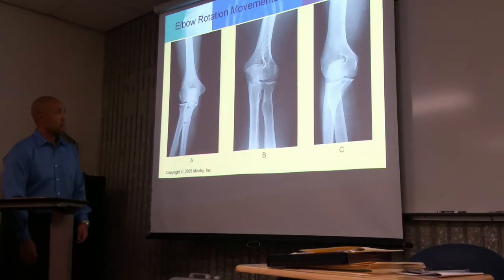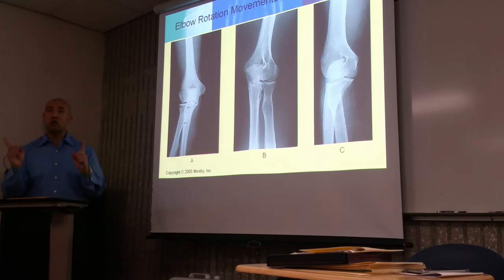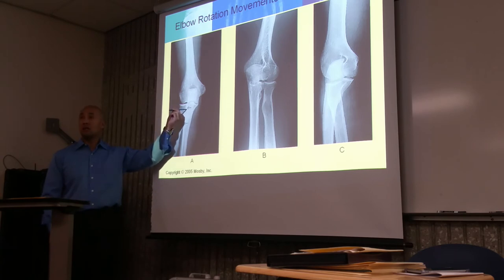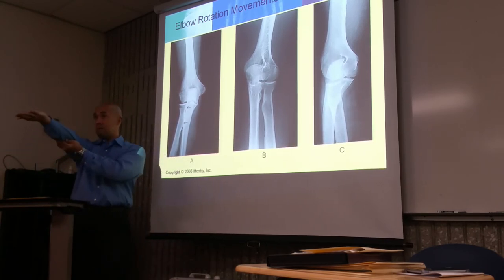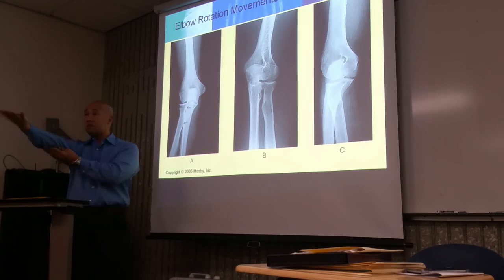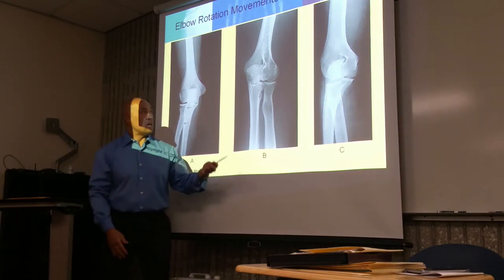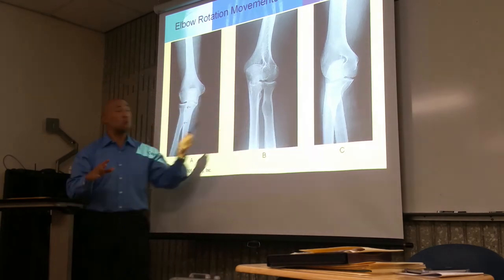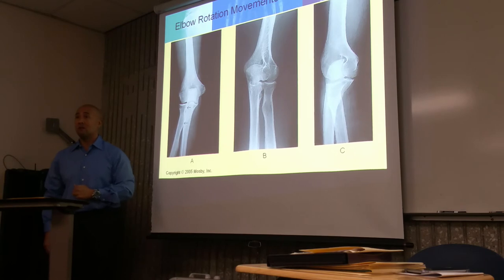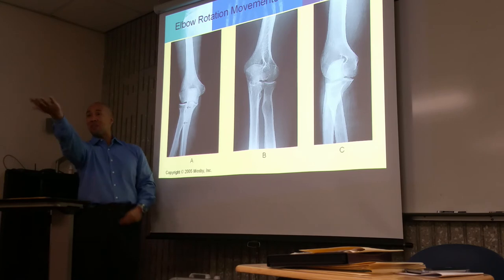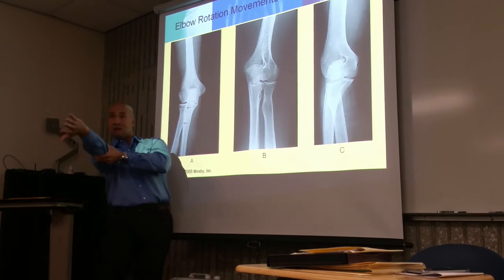Here we have three positions. In a true AP, you're going to have slight superimposition of the radial head and the tuberosity with the ulna. If you pronate your hand, the radius and ulna cross. So when the head is free from superimposition and the radial tuberosity is also free from superimposition, it's going to be your lateral rotation — thumb down, pinky up — with the epicondyles at a 45-degree obliquity from palm up.